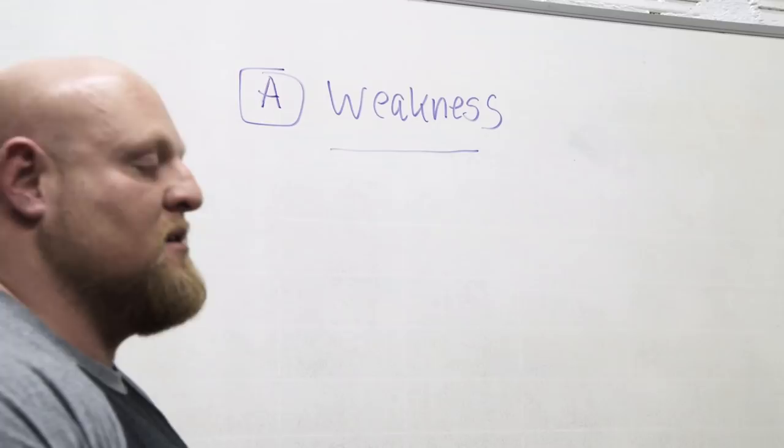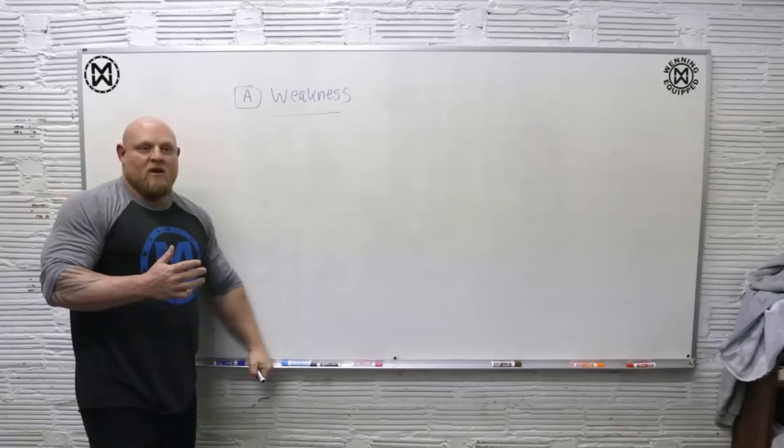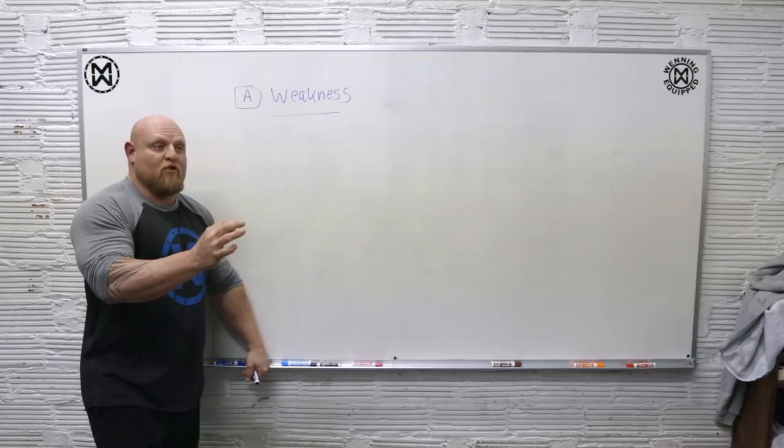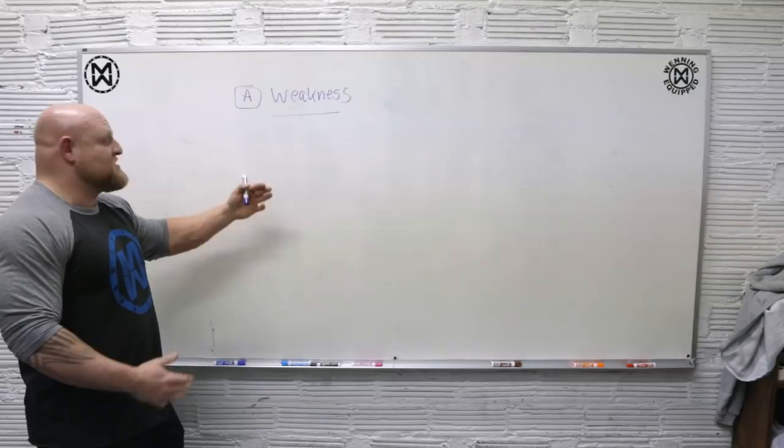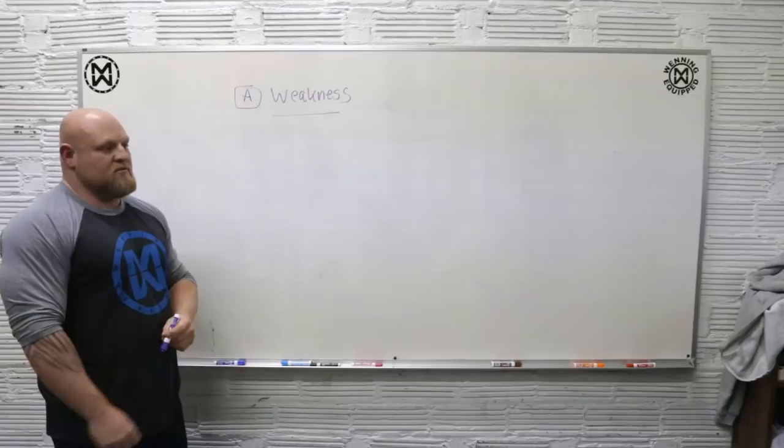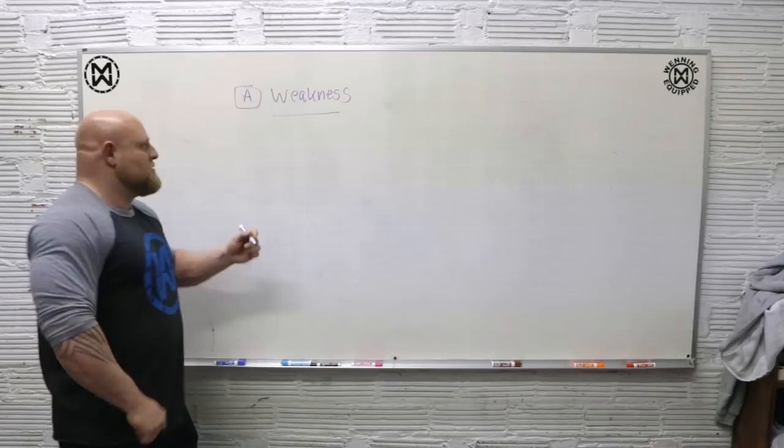Now the problem with saying that in a statement is the fact that weaknesses can be different for everyone. Now in a team setting we don't normally get that luxury of a one-on-one type. The problem is that all of our weaknesses can be different. So what are some key things that's going to change our weaknesses? We have to know these things or we make terrible training decisions.